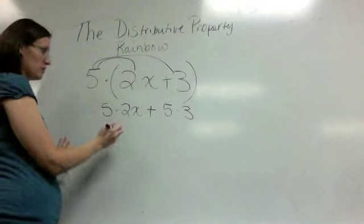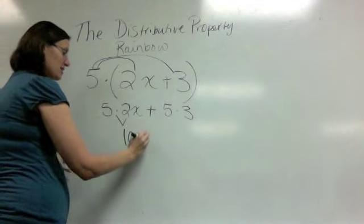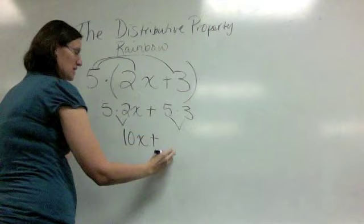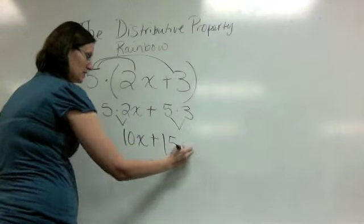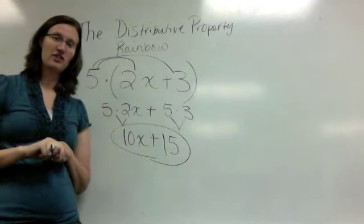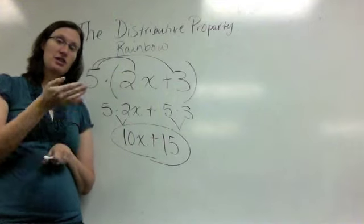Now we can do each of those. 5 times 2x is 10x. 5 times 3 is 15. And there is your final answer, 10x plus 15.